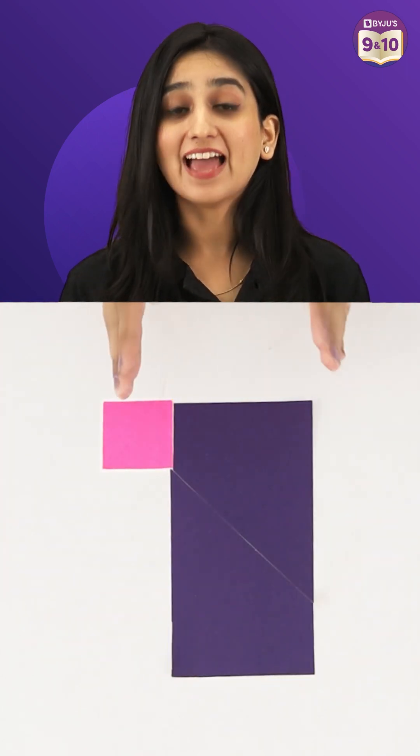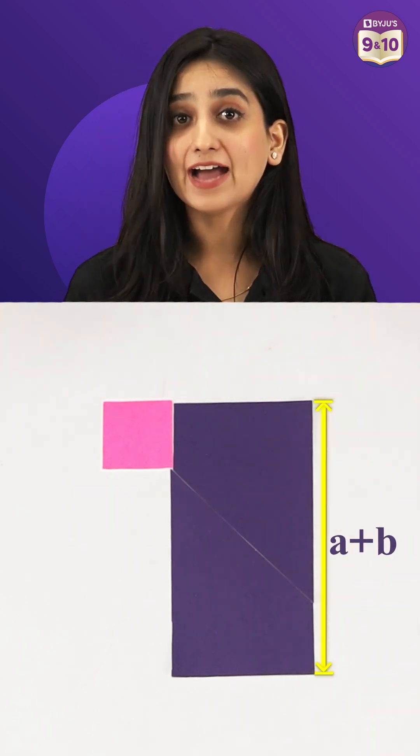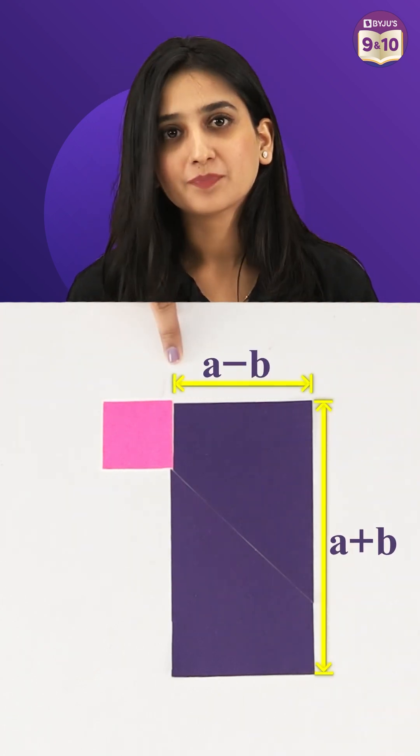Yes, so this rectangle has a length A plus B and width A minus B. Right?